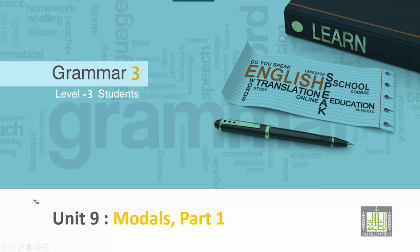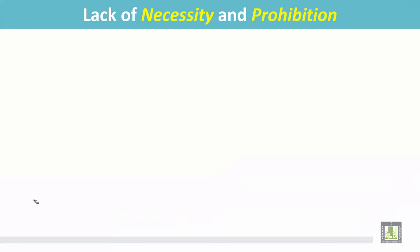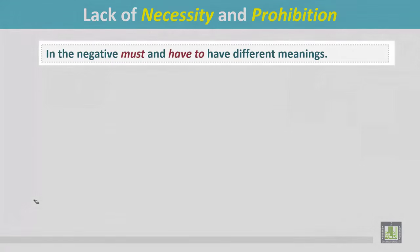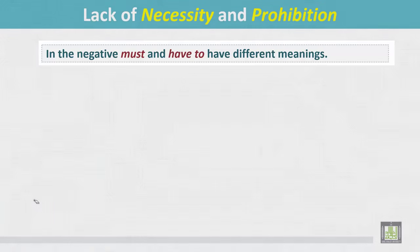Grammar 3 for Level 3 Students, Unit 9: Modals, Part 1 — Lack of Necessity and Prohibition. In the negative, 'must' and 'have to' have different meanings, though they have the same meaning in the affirmative form.